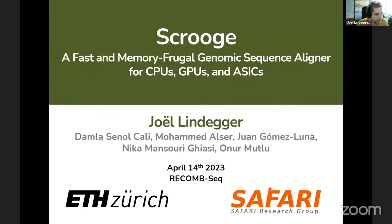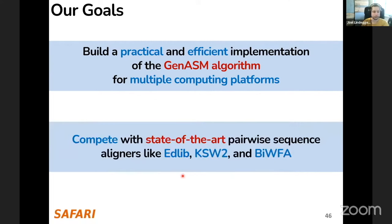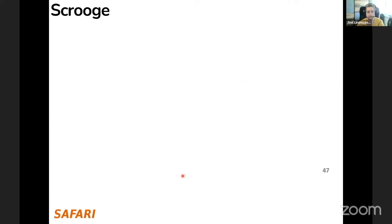I'm presenting my SCROOGE work. The prior work was led by my mentor Damla, who is also a co-author on this one. We presented this recently at RecombSeq, and it also got accepted to the Bioinformatics journal. Our goal was to build a practical and efficient implementation of the GenASM algorithm for multiple computing platforms. Previously we just had ASIC, and we want to compete with state-of-the-art pairwise sequence aligners like Edlib, CaseW2, and BiWFA on all of these computing platforms.